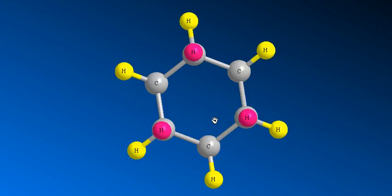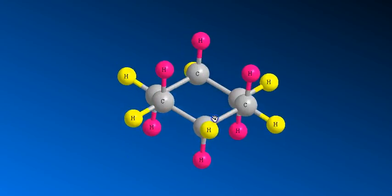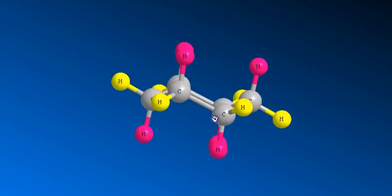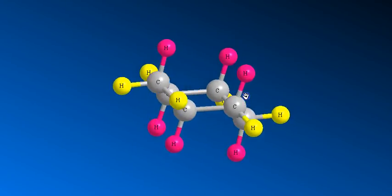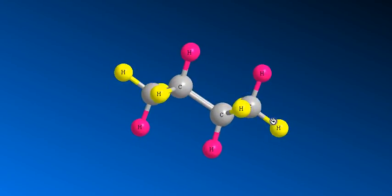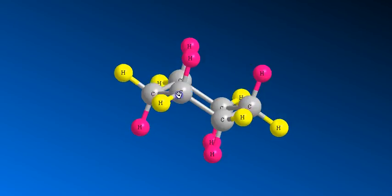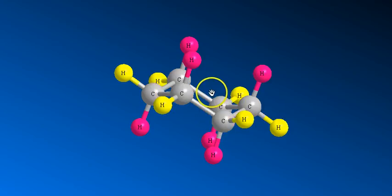This is the peculiarity of the cyclohexane ring structure. This is a chair ring structure — it goes up and down like that. This is the chair conformation of cyclohexane, and this is the most stable conformation.